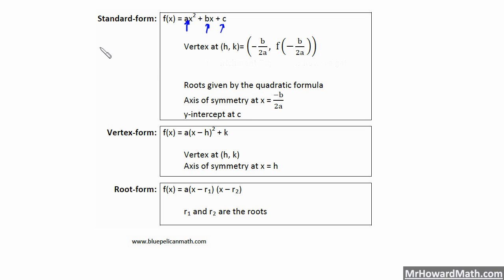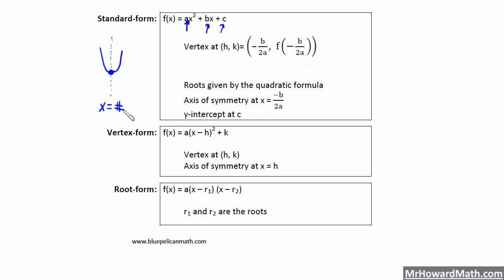The axis of symmetry — remember, if we have a parabola that opens upward, the axis of symmetry is the vertical line that is the halfway point of the parabola. It is symmetrical about that axis of symmetry, hence the name. That axis of symmetry is given by X equals negative B over 2A. Notice that the vertex X coordinate is also the axis of symmetry. If your vertex is right there, its X coordinate gives you the axis of symmetry — a vertical line with equation X equals the X coordinate of the vertex.